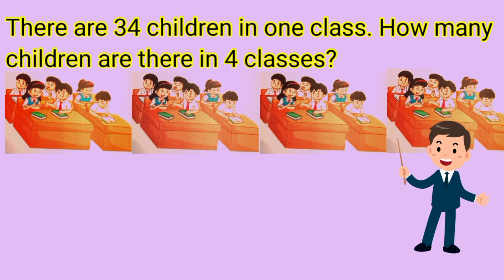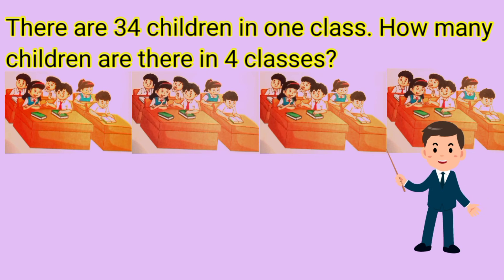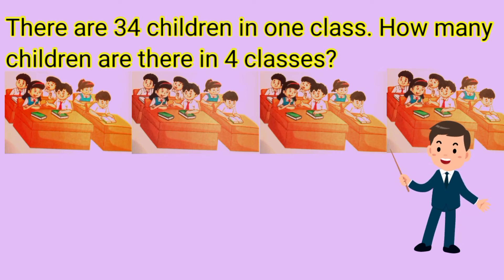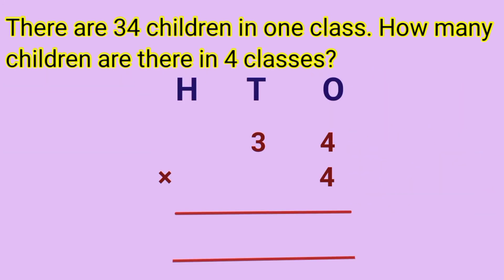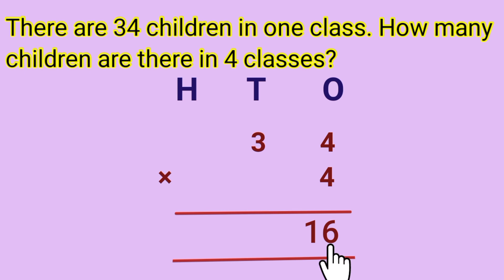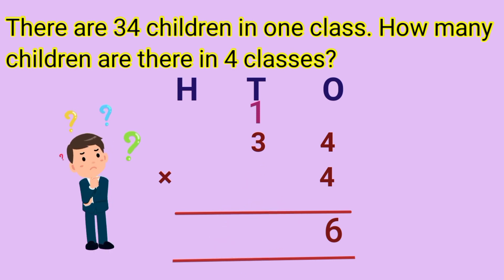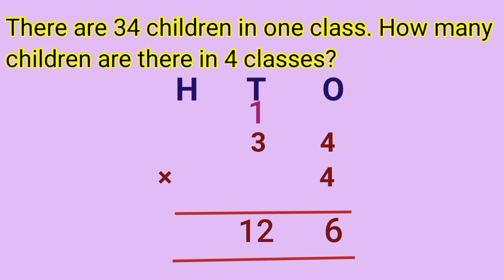Let's find the answer. 34 multiplied by 4. First, multiply the ones place: 4 multiplied by 4 is equal to — what is the answer? Yes, 16. Since 16 is a 2-digit number, we put 6 in the ones place and carry 1 over to the tens place.